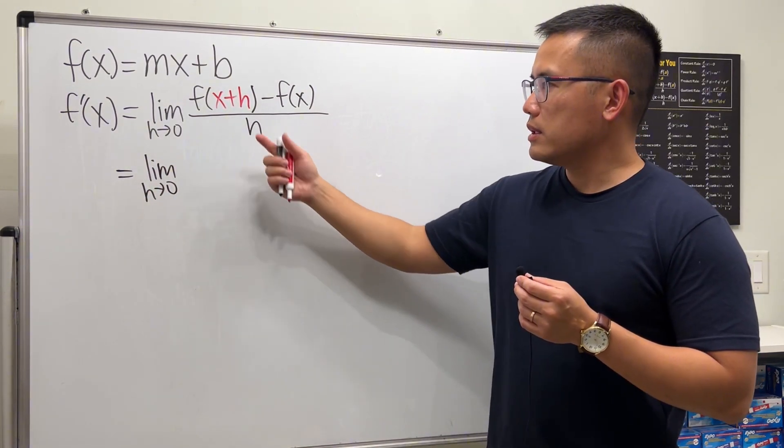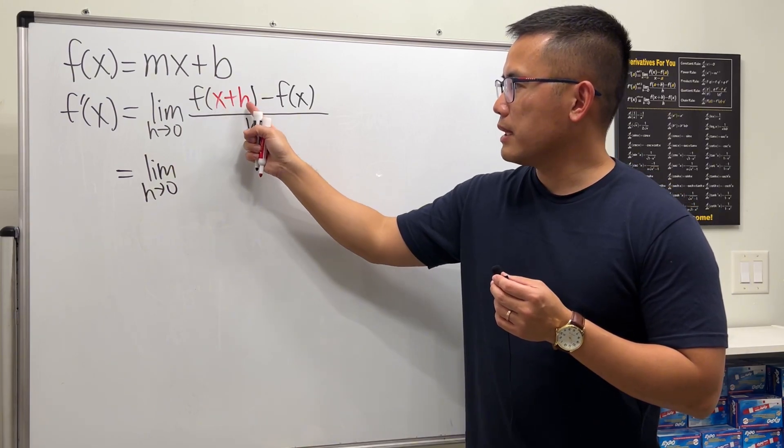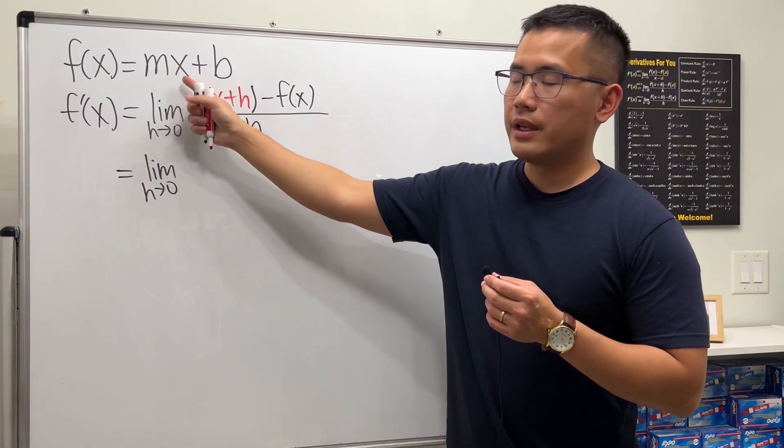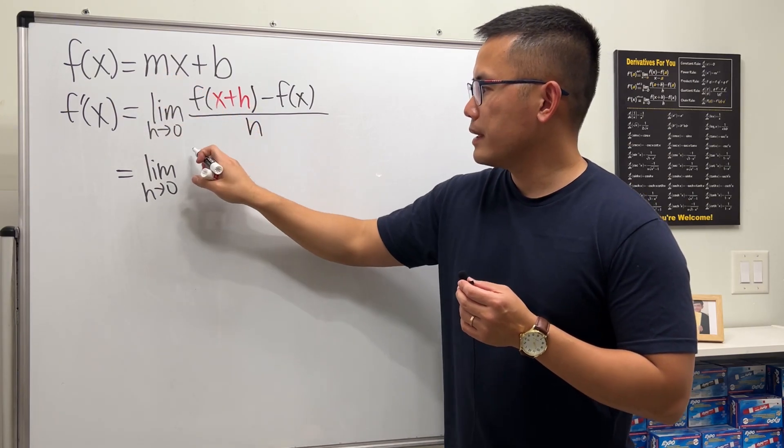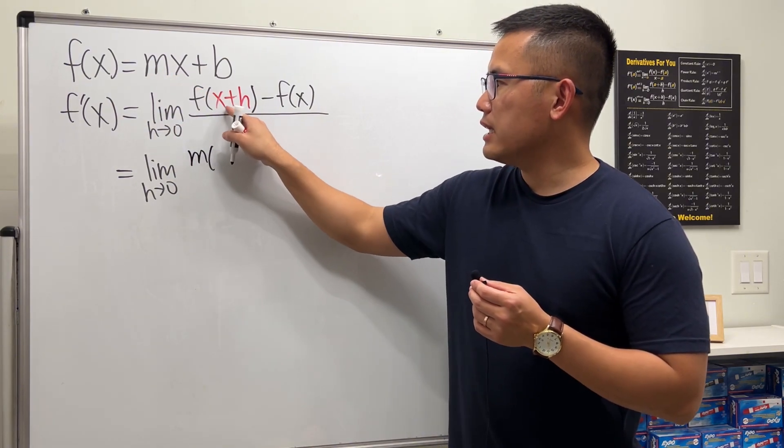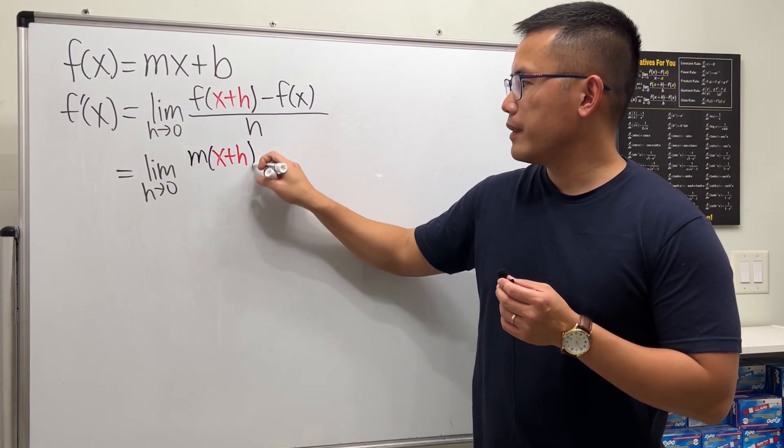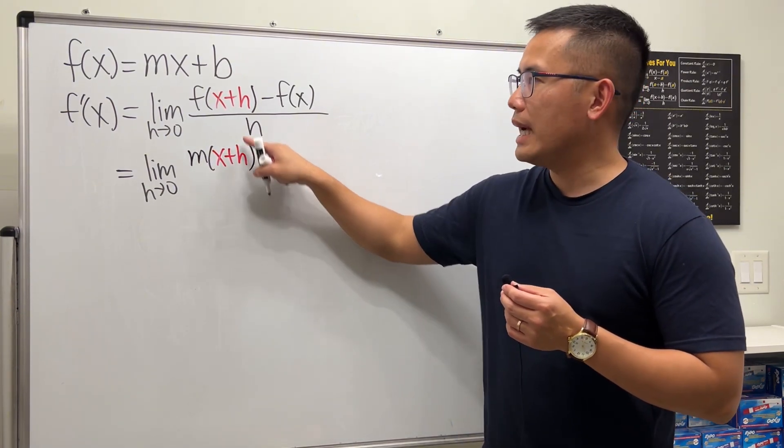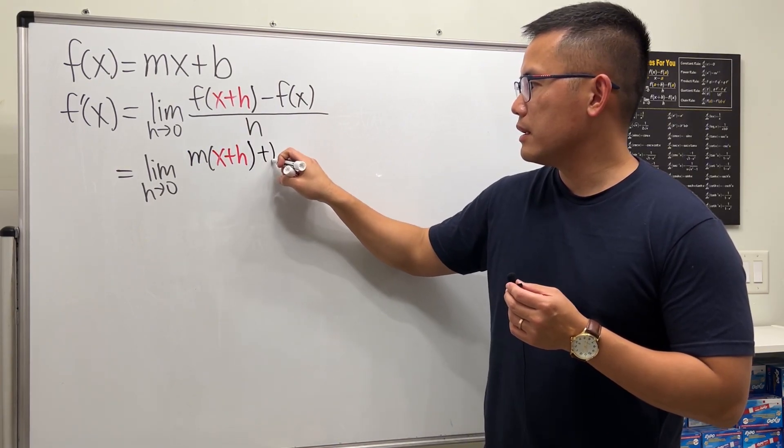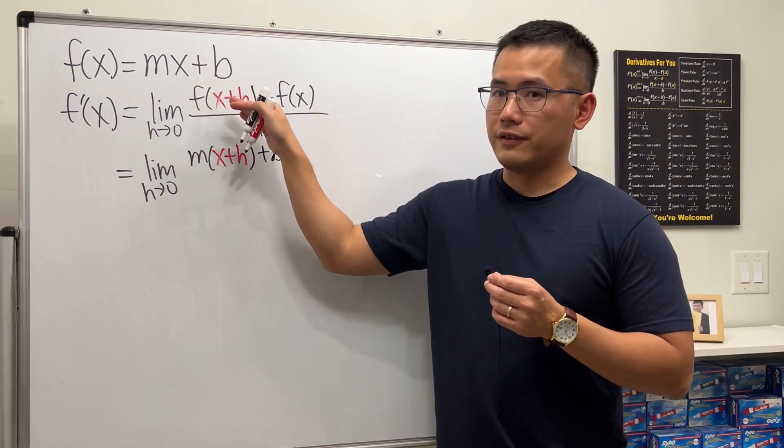To construct this, first we put x plus h into this x here. So for this part, we will get m times x plus h in this parenthesis, and after this we still have that plus b.